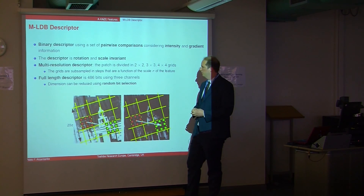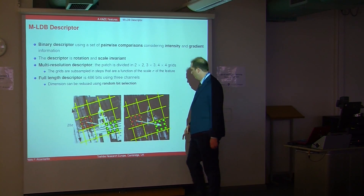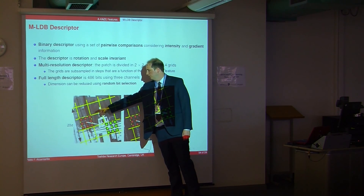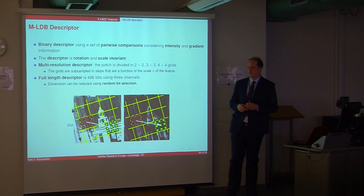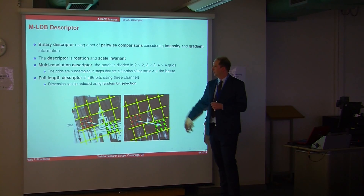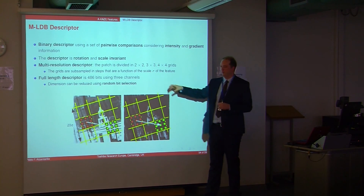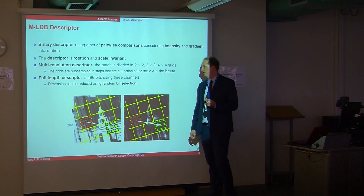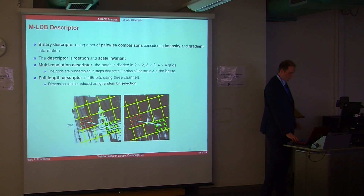The MLDB descriptor is similar to LDB but is scale and rotation invariant. We compute derivatives from the non-linear scale space instead of Haar wavelets. A rectangular patch is divided into different subgrids; we sample and sum responses from those sampling points, then do pairwise comparisons between grids in intensity and gradient. The full descriptor length is 486 bits using three channels: intensity, horizontal gradient, and vertical gradient. Dimension can be reduced by random selection for faster matching.